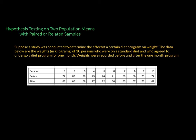To understand how it is done, let's work through an example on a diet program. Suppose a study was conducted to determine the effect of a certain diet program on weight. The data are the weights in kilograms of 10 persons who were on a standard diet, and then were asked to undergo a program for one month. Our expectation is that there will be some changes, and we will see whether the diet program is effective in reducing weight.